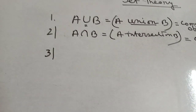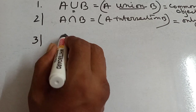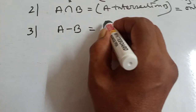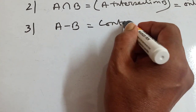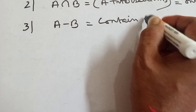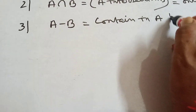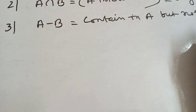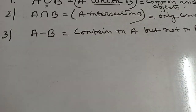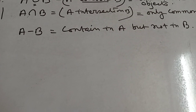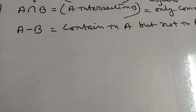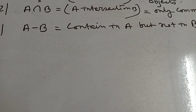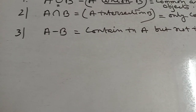Third: A minus B. A minus B means the elements contained in A but not in B. The elements of B that are removed from A — that is called A minus B.